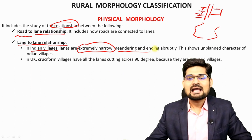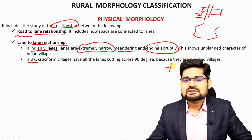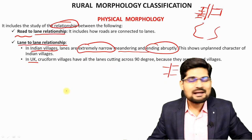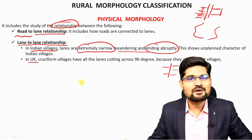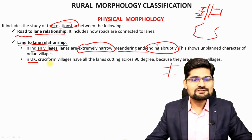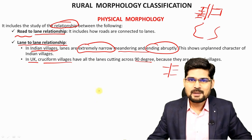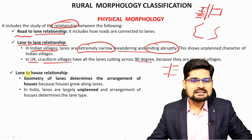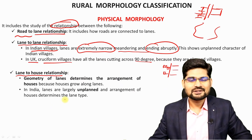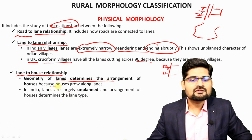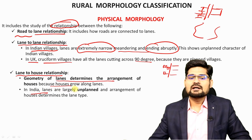In Indian villages, lanes are extremely narrow and meandering — often in a zigzag fashion, not straight lines, and sometimes ending abruptly. But in UK villages, lanes cut at almost 90 degrees, like a trellis pattern similar to what we observe in drainage geomorphology. In developed nations like Europe and the UK, you find this cruciform, 90-degree cutting village pattern. Shape is very important in morphology, and this pattern is mostly seen in developed nations.